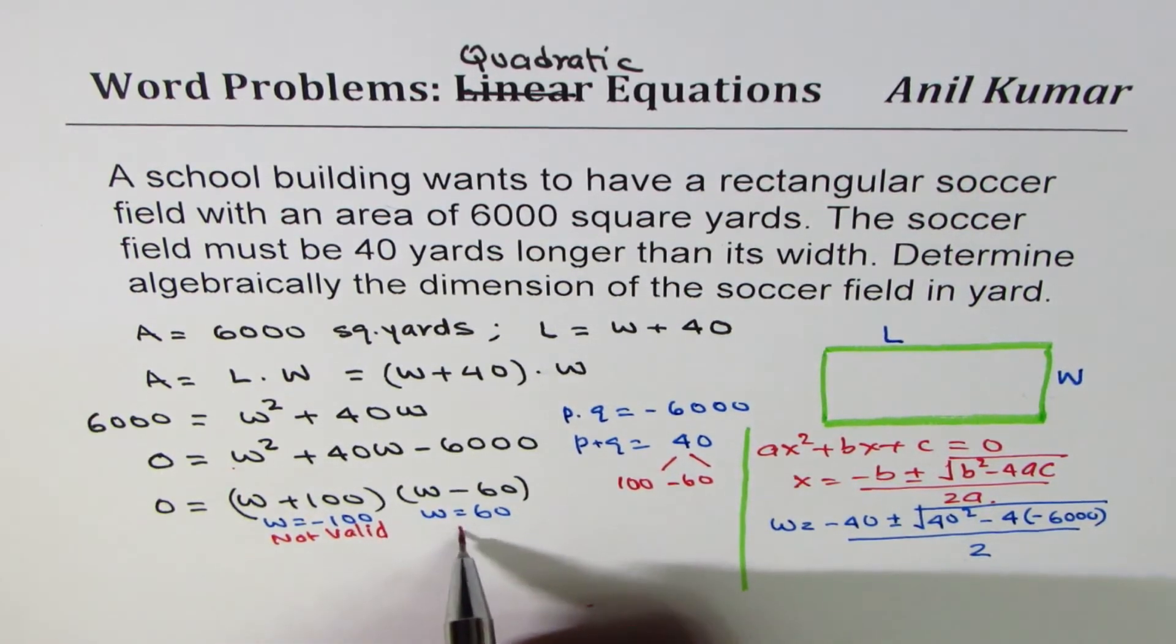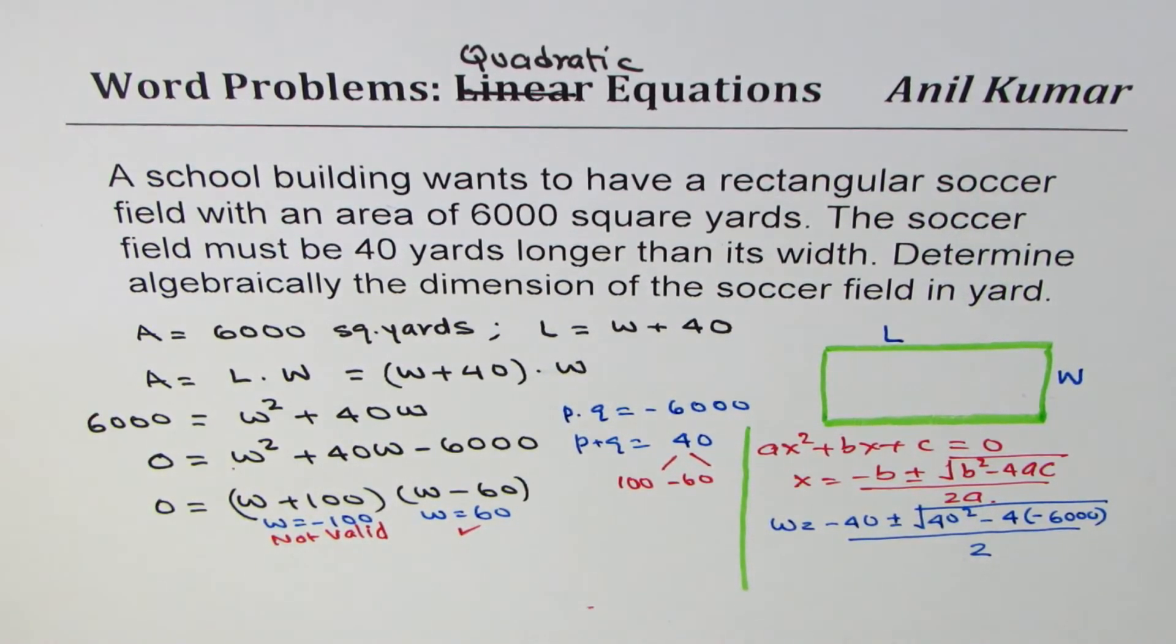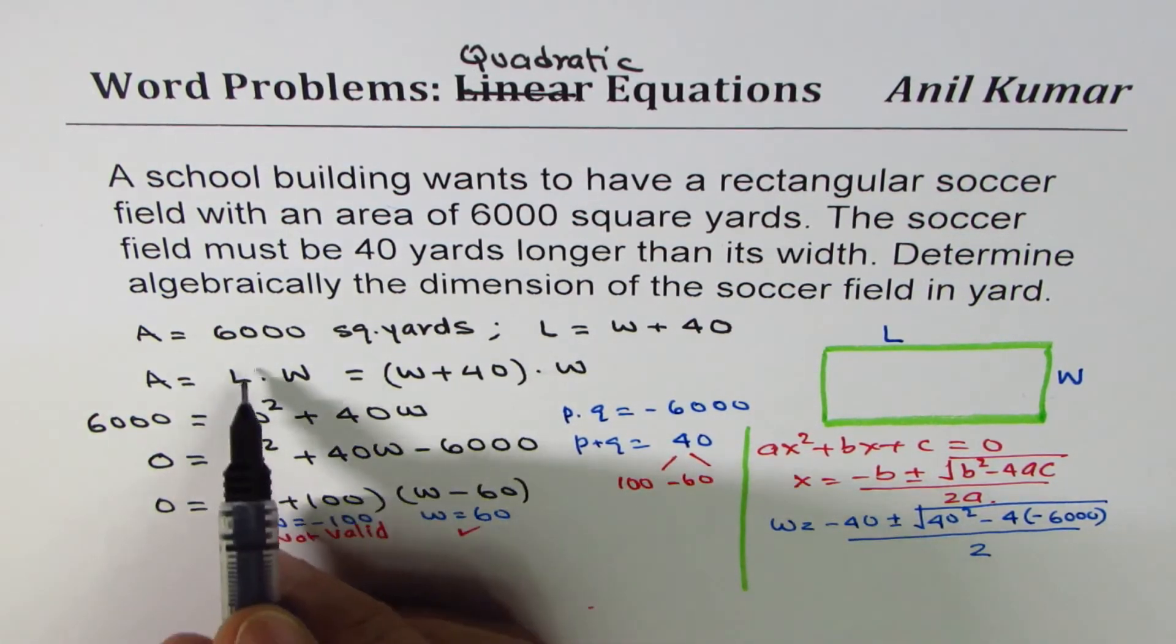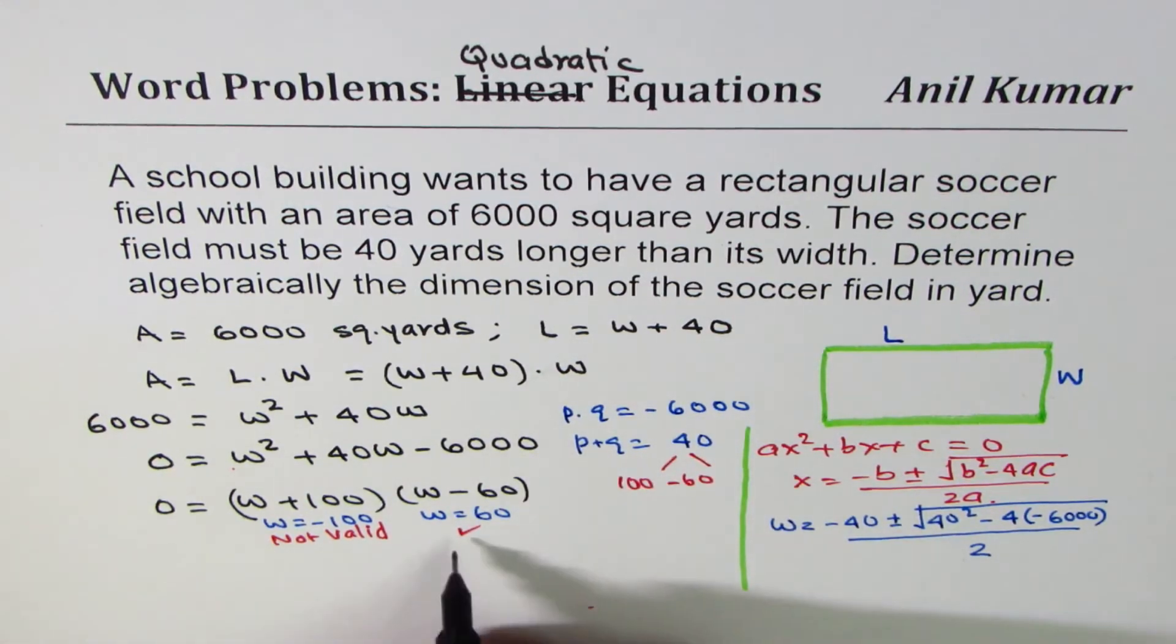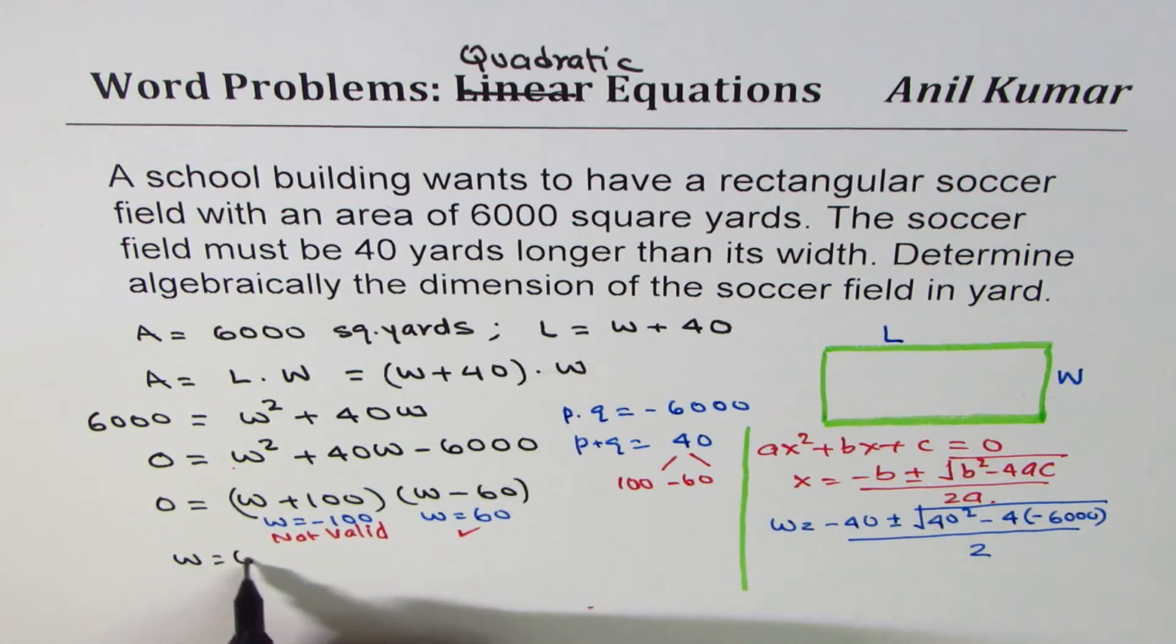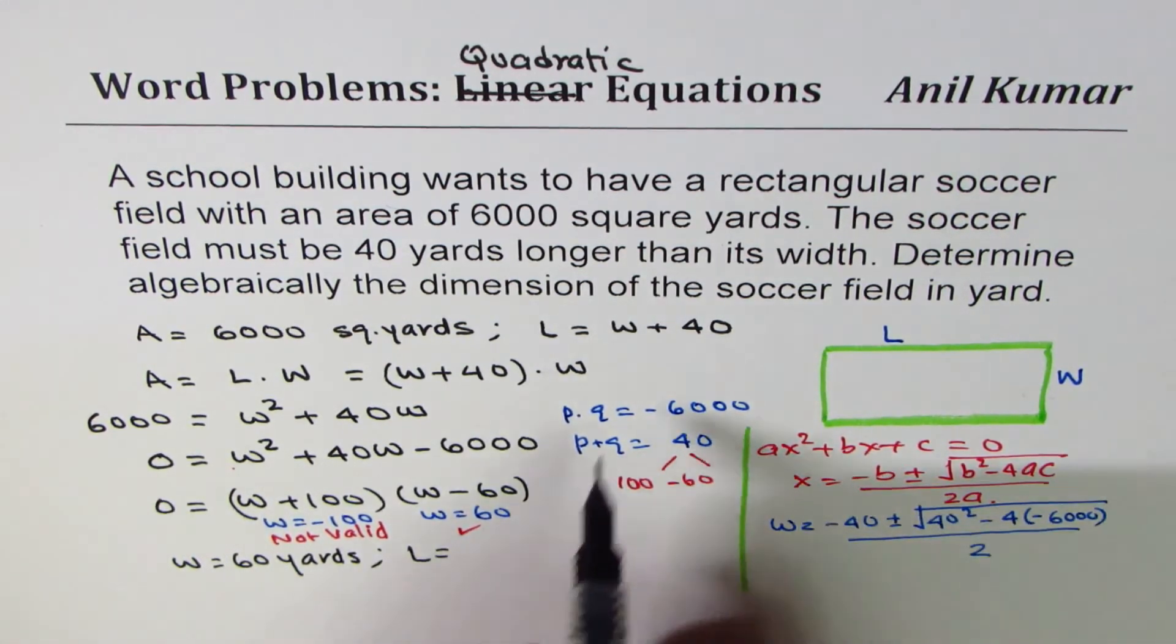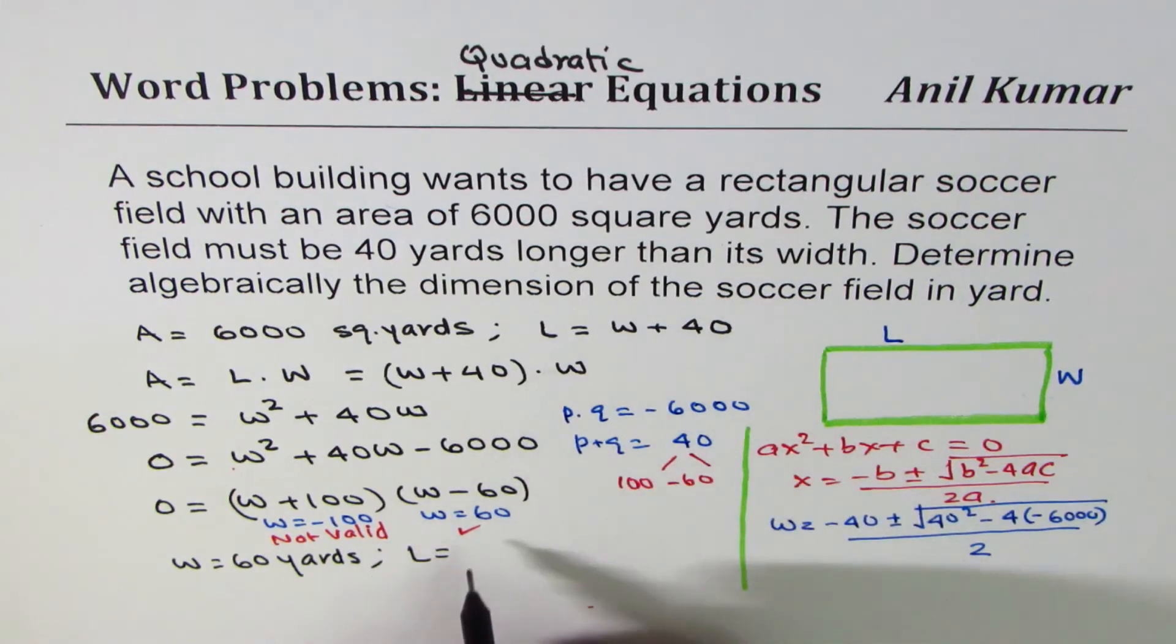We'll take W equals 60 yards. If width is 60, then what is the length? Length is width plus 40, so we've got width as 60 yards and length should be 60 plus 40, and that is 100 yards.